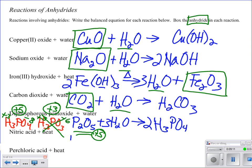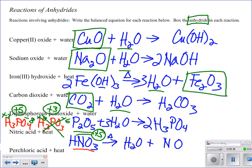Next one is nitric acid, HNO₃ — you need to know your acid nomenclature. We decompose it with heat. Always start with the easy stuff: we know it forms water, and some nitrogen oxide compound. Look at HNO₃: hydrogen is +1, oxygen is -6 total, so nitrogen is +5. That means over here, with oxygen at -2 and nitrogen at +5, the compound is N₂O₅.